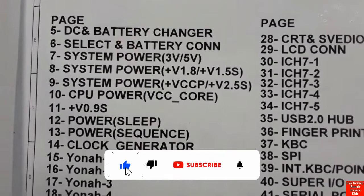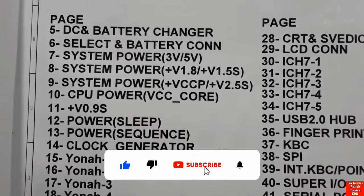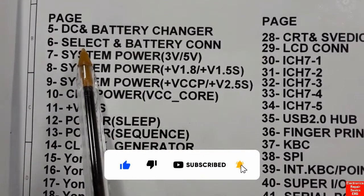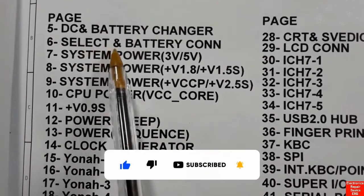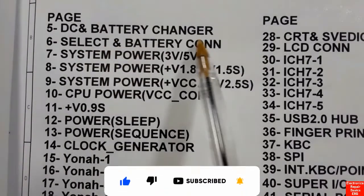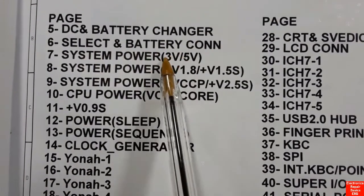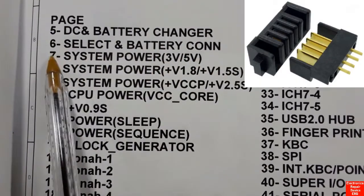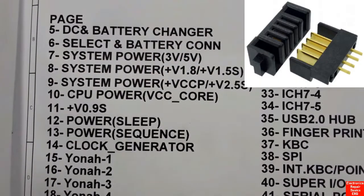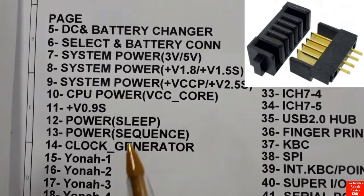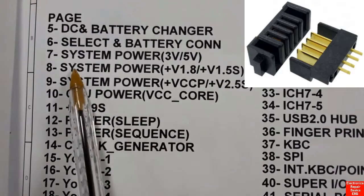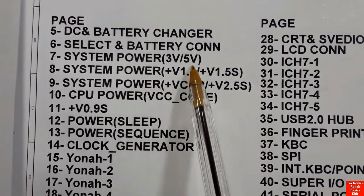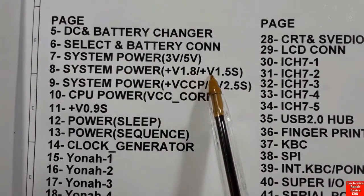When the adapter is removed, the battery will be charged to power the computer motherboard. Here in page six we have select and battery connect, so basically here you will find the battery connector pin configuration or the battery connector pinouts. Here in page seven we have the system power three volt and five volt.